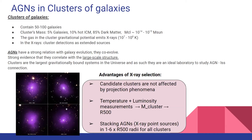There are some advantages of X-ray selection. Candidate clusters are not affected by projection phenomena. From temperature and luminosity measurements, we can easily approximate the cluster mass, and as a result we have an important radius for galaxy cluster study: the radius R500. R500 is the radius where the mean density is 500 times the critical density of the universe at the cluster's redshift, and its value fluctuates between 300 kiloparsec and 1 megaparsec depending on the mass.